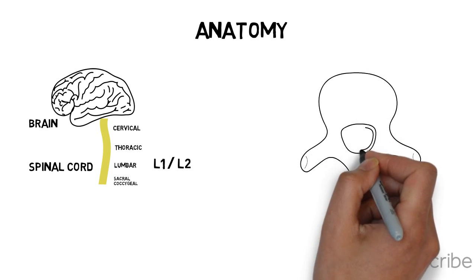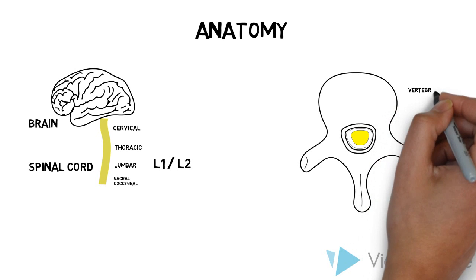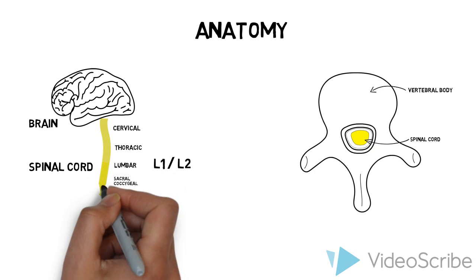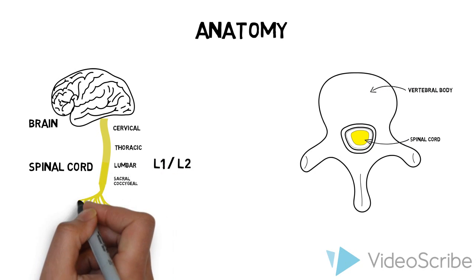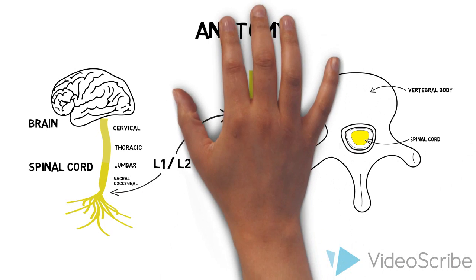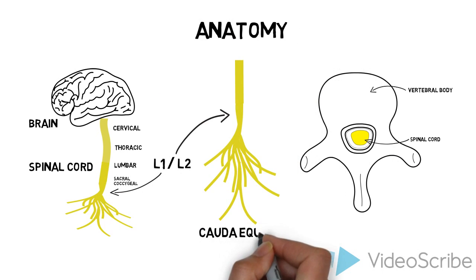It sits within the vertebral canal, posterior to the vertebral bodies. Below this level, the nerve roots individually separate to form the cauda equina. In general, nerve roots exit through the intervertebral foramina to mediate motor and sensory functions.